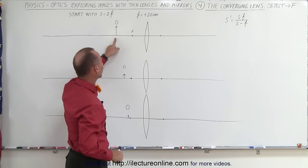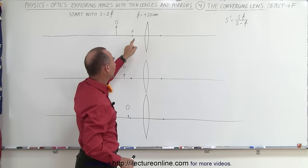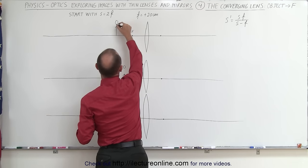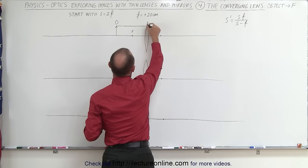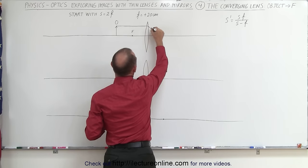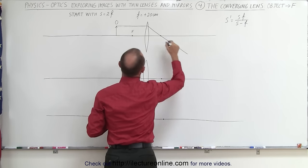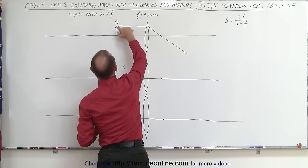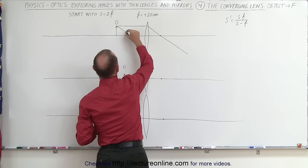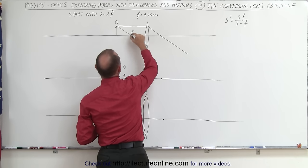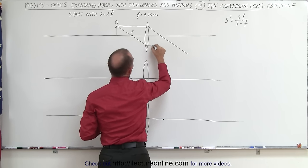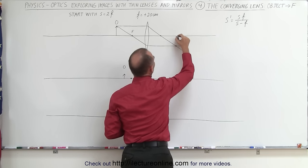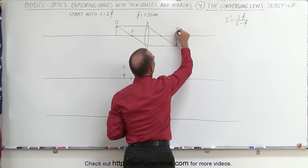First of all, when it's at twice the distance away from the lens as the focal length, you draw the first ray to the lens — it diverges or bends and goes to the focal point. You draw the second ray to the focal point until it hits the lens, then it diverges and moves parallel with the optical axis. Where the two converge, that's where the image will appear.